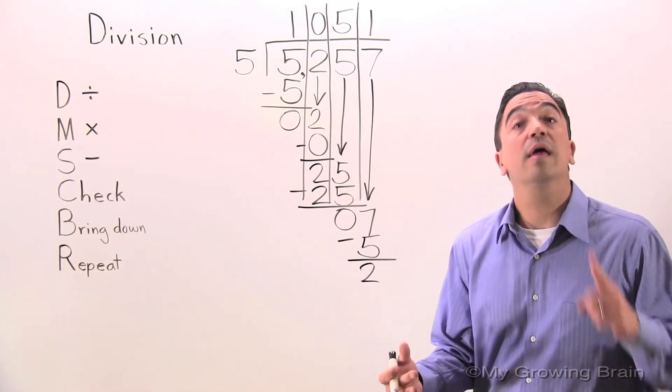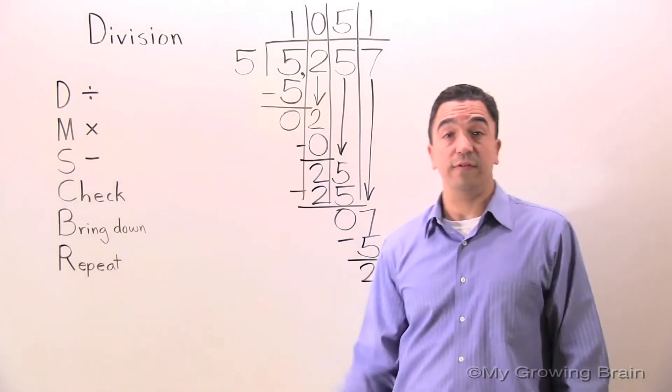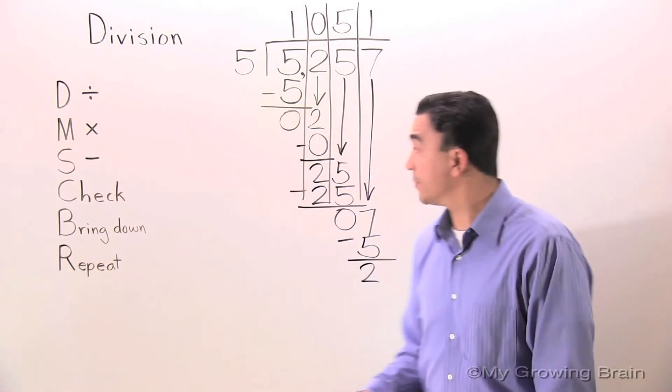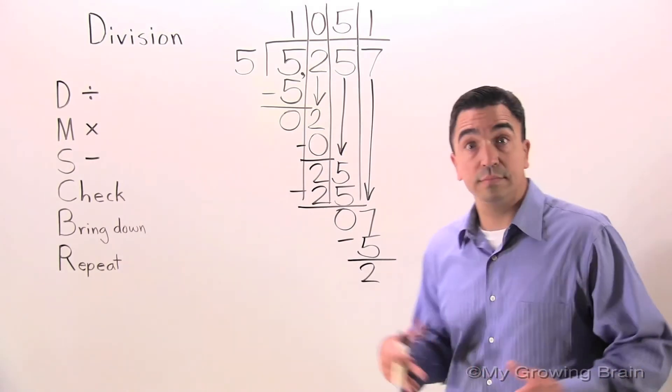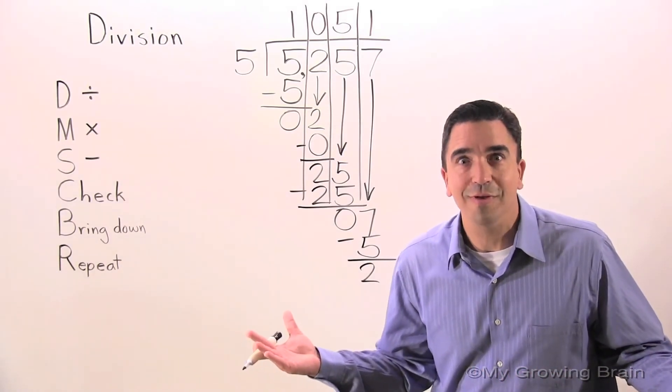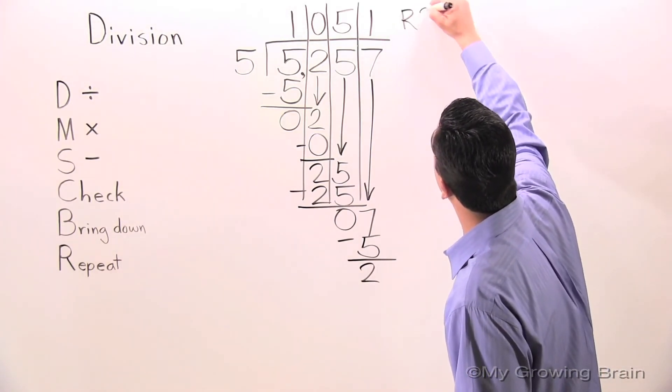Next step, check: 2 is less than 5. Keep on going. Bring down. There's nothing to bring down. Therefore, we have a remainder of 2.